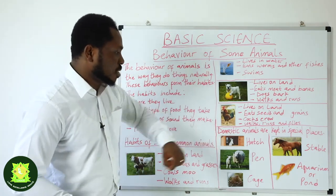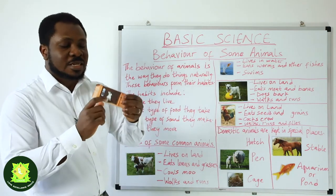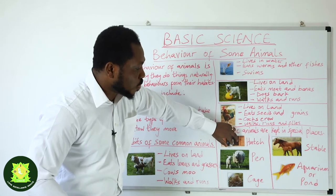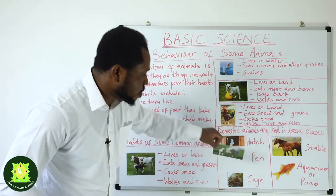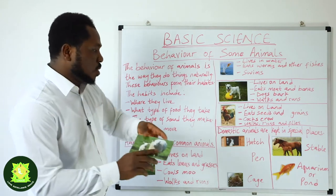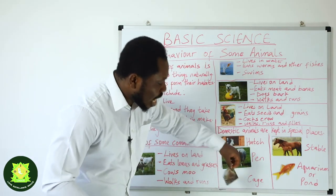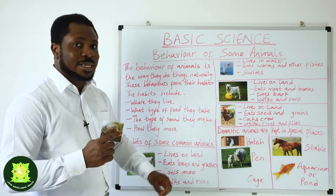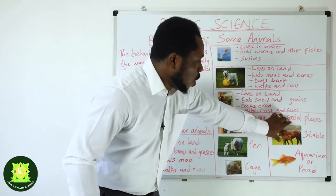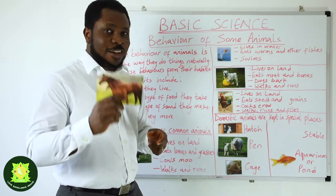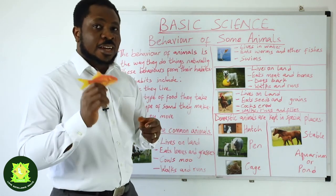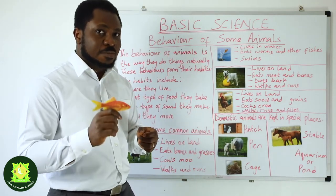A good example is the rabbit. The rabbit is kept in a hutch. Sheep are kept in a pen. Birds are kept by humans in a cage. Horses are kept in a stable. And fishes are kept in an aquarium or a pond.